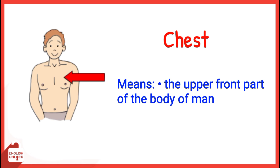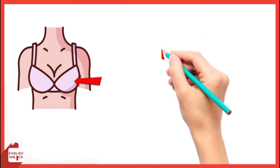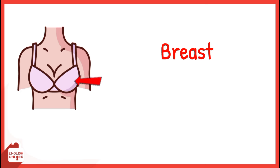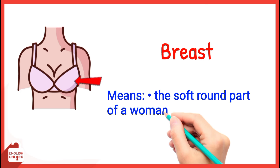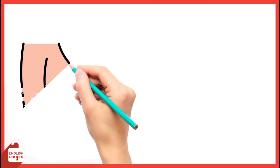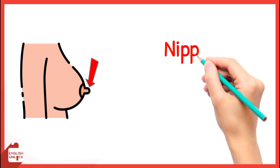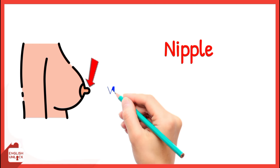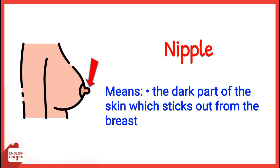Chest means the upper front part of the body of a man. Breast means the soft, round part of a woman's body that can produce milk. Nipple means the dark part of the skin which sticks out from the breast.